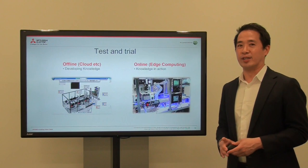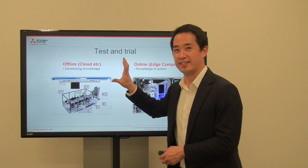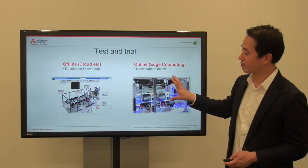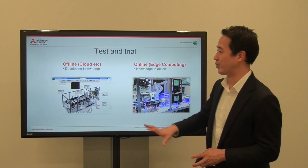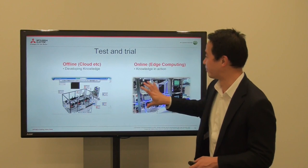One important thing you have to understand is that the virtual world — the offline world, what you're analyzing on a PC — might be different from the real world, your actual machine. You cannot replicate everything that's happening in the real world in a computer. There are things that make it not a 100% virtual replica — the model you're making might be altered from the actual world.